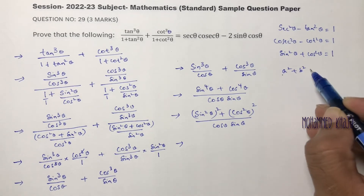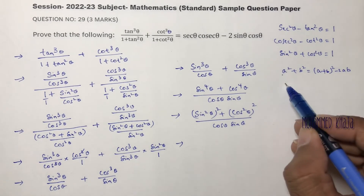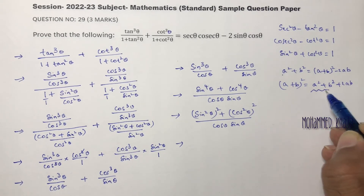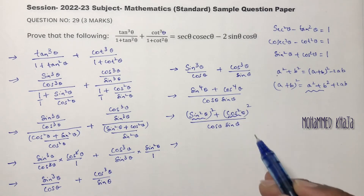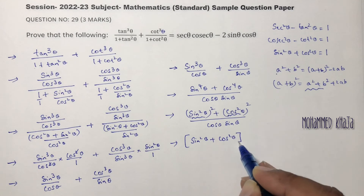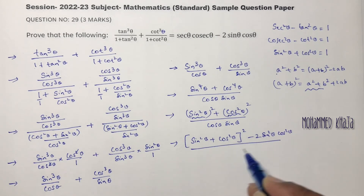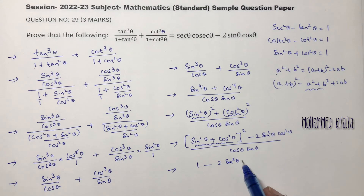Now apply the identity: a square plus b square equals a plus b whole square minus 2ab. Here a is sin square theta and b is cos square theta. So sin square theta plus cos square theta whole square minus 2 sin square theta cos square theta, all divided by cos theta sin theta. Since sin square theta plus cos square theta equals 1, this becomes 1 minus 2 sin square theta cos square theta, divided by cos theta sin theta.